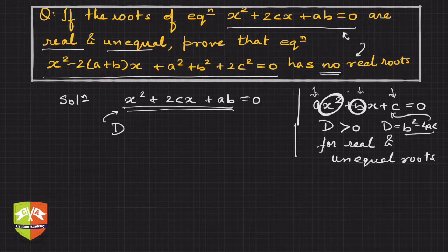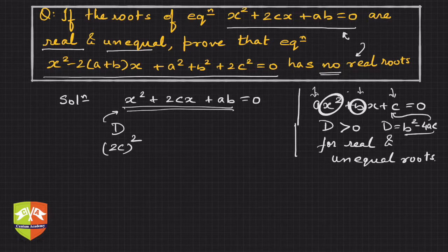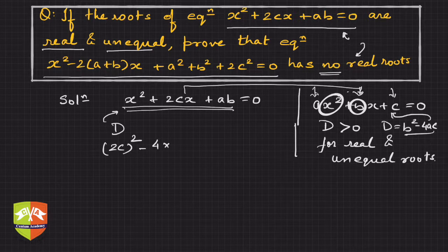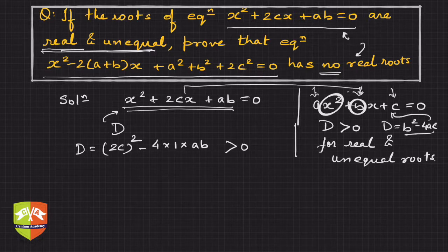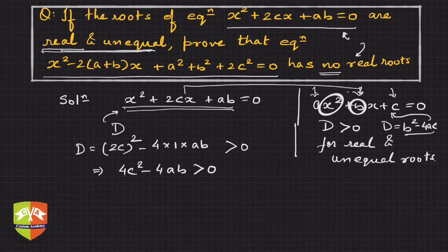Writing the discriminant of the first given equation: b² is (2c)² = 4c², minus 4 times the coefficient of x² which is 1, multiplied by the constant term ab. This is D1, and since the roots are real and unequal, this must be greater than 0. So from this we get: 4c² - 4ab > 0.